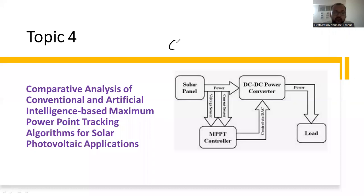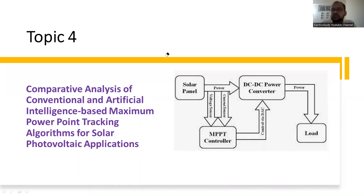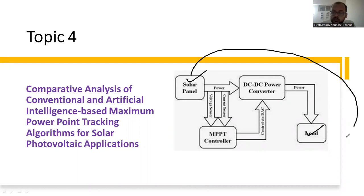Another important concept: maximum power point tracking. You should study what maximum power point tracking is. It is a technique to operate the PV panel at its maximum efficiency. It works based on the principle of the maximum power transfer theorem, which you already studied in network analysis. You are using one algorithm such that source impedance and load impedance are matched. When load impedance equals source impedance, maximum power flow takes place from source to load. Our ultimate goal is to transfer the maximum power from the solar panel to the load.